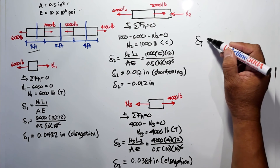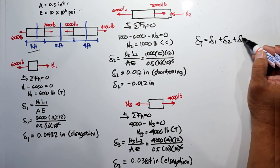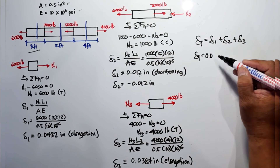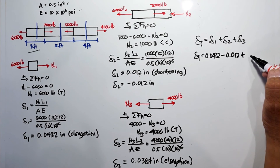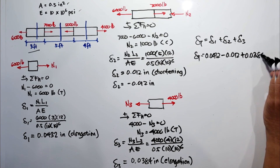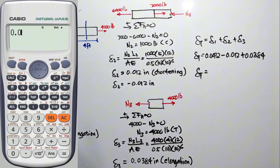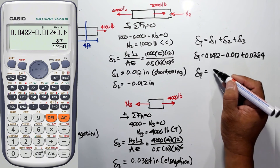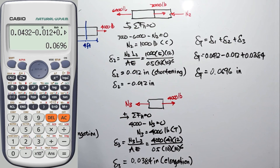Finally, the total deformation is the sum of the three deformations: 0.0432 minus 0.012 plus 0.0384, which equals 0.0696 inch.